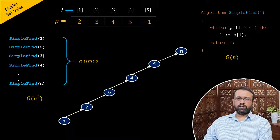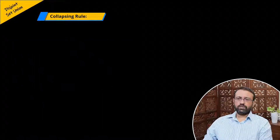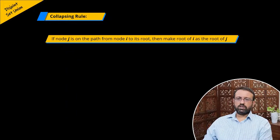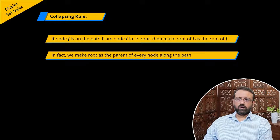To improve the performance of the simple find algorithm, we need to ensure that the tree will be of minimum height. To achieve this, we make use of the collapsing rule for the find operation. The collapsing rule states that if node j is on the path from i to its root, then make the root of i as the root of j. In simple terms, after finding the root of a node, we replace the parent of every node along the path with the root node.